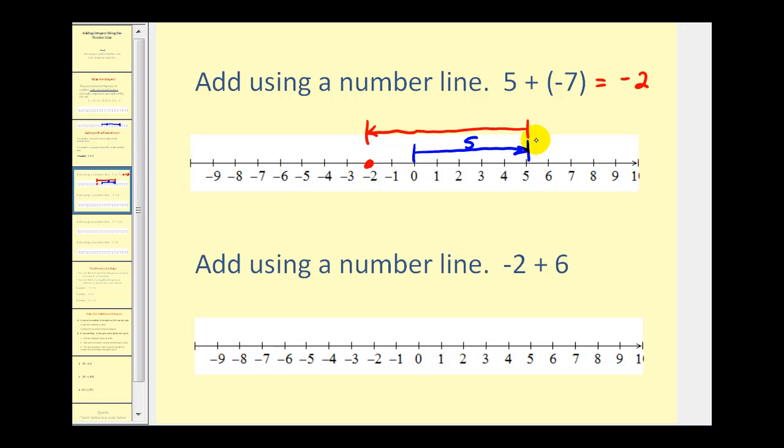Again, this was the movement from the positive five and this was the movement from the negative seven.